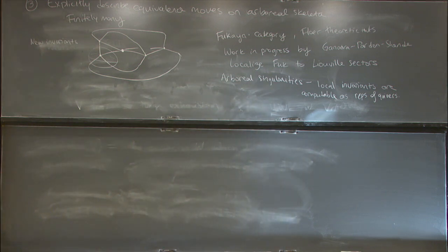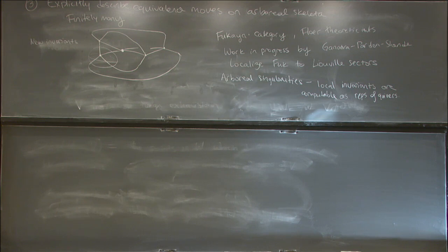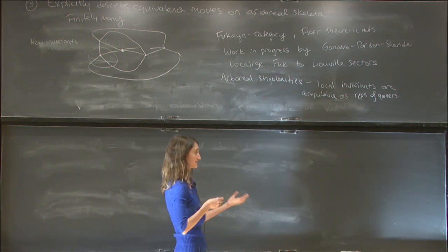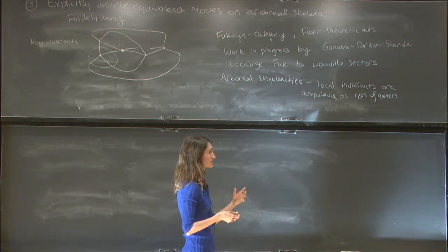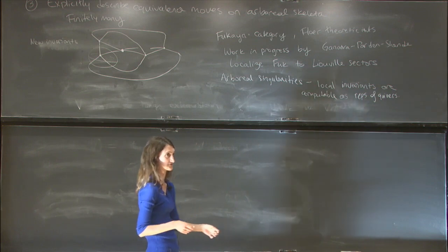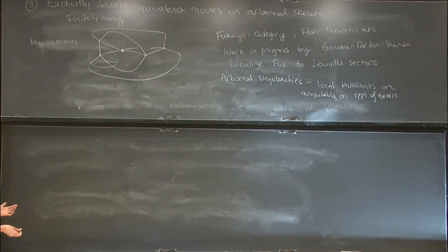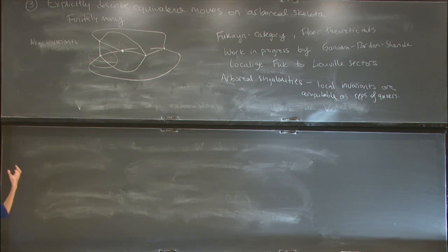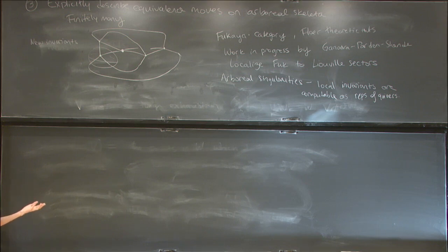Now I want to draw a bunch of pictures representing things that are actual analytic Weinstein homotopies — to give some sense of the problems to overcome at these various levels. The first issue is that not all skeletons will have a unique symplectic neighborhood. The first way to see this is if you have an index zero minimum of our Liouville vector field and we attach an index two critical point.